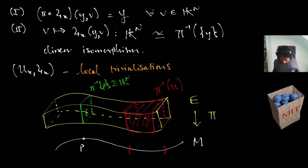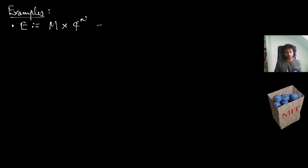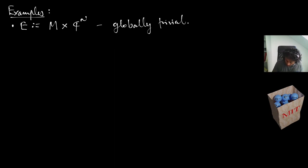Some examples. We can set E to be M × C^N — this is a bundle with a trivialization that is all of M, so it is globally trivial and complex rank N. Another example you would have seen before is the tangent bundle TM or the cotangent bundle T*M — these are real n-dimensional bundles.